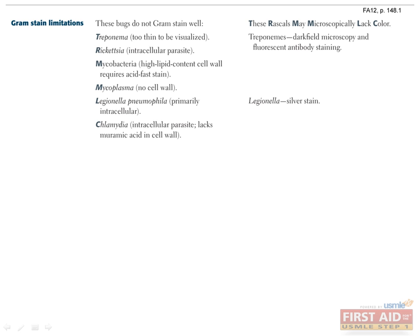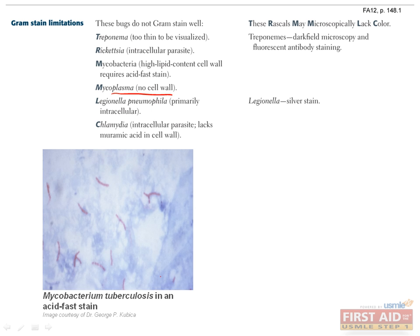The organisms listed here are those that cannot be identified via gram stain, but can be differentiated using other techniques. Mycoplasma cannot be stained because it has no cell wall. Mycobacterium cannot be gram-stained, but it can be stained with the acid-fast method, which takes advantage of the high lipid cell wall content of mycobacterium. Mycobacterium will be bright red after staining with carbol fuchsin because its lipid-rich cell wall prevents acid from washing out or decolorizing the stain.